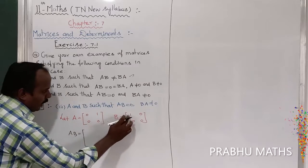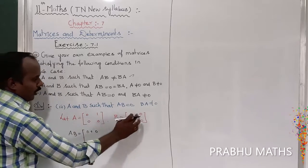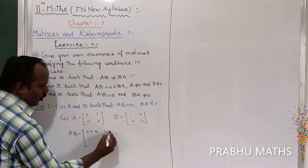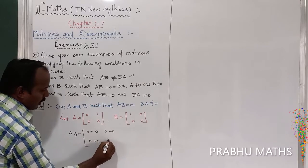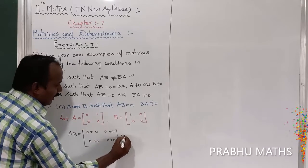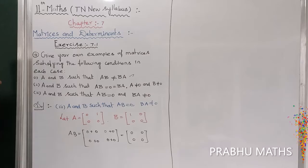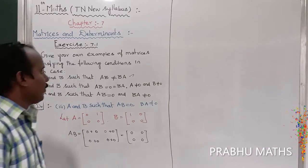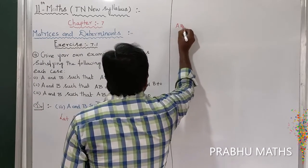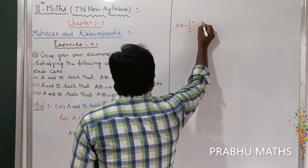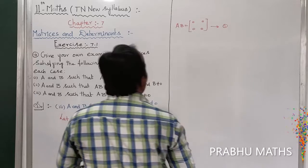AB equals: first row — 0 into 1 plus 0 into 0 = 0, and 0 into 0 plus 1 into 0 = 0; second row — 0 plus 0 = 0, and 0 plus 0 = 0. So we get the answer: AB matrix is equal to [0, 0; 0, 0]. That is the zero matrix. This is equation number 1.